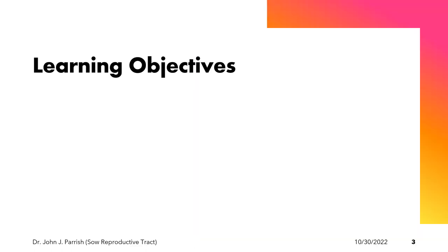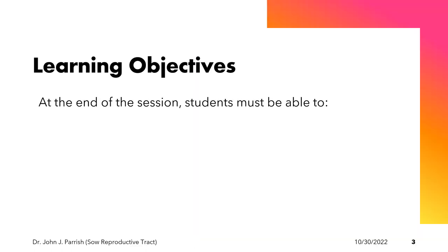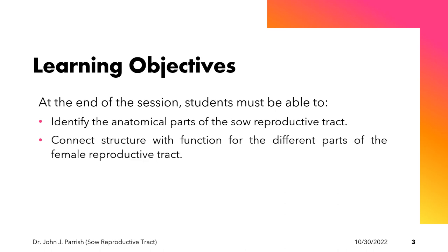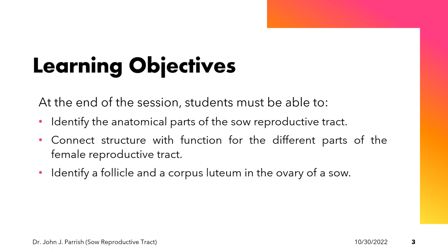At the end of the session, students must be able to identify the anatomical parts of the sow reproductive tract, connect structure with function for the different parts of the female reproductive tract, and identify a follicle and a corpus luteum in the ovary of a sow.